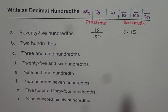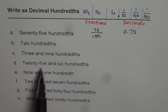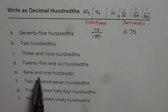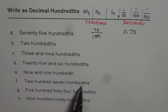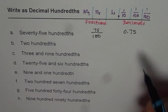Let me read all the practice problems for you. You can try them first and then look at my solution: two hundredths; three and nine hundredths; twenty-five and six hundredths; nine and one hundredth; two hundred seven hundredths; five hundred forty-four hundredths; and nine hundred ninety hundredths. We can also use a place value chart, so let me sketch one.